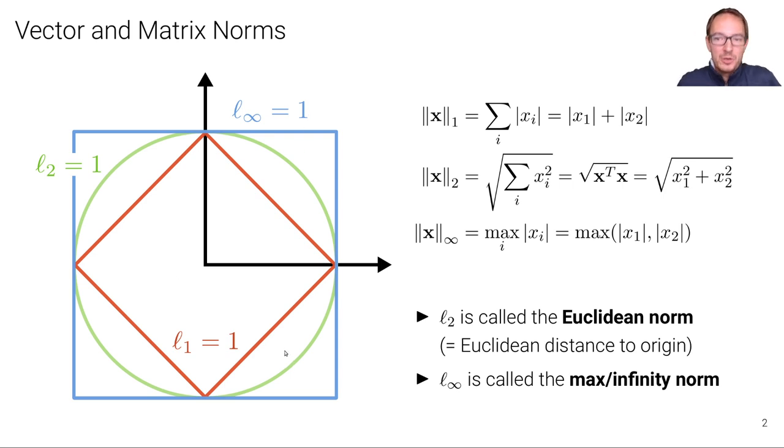Maybe not surprisingly, the L2 norm leads to a circle because we have this quadratic expression here. And if we set this equal to constant one, then we get a circle because this is the circle equation.